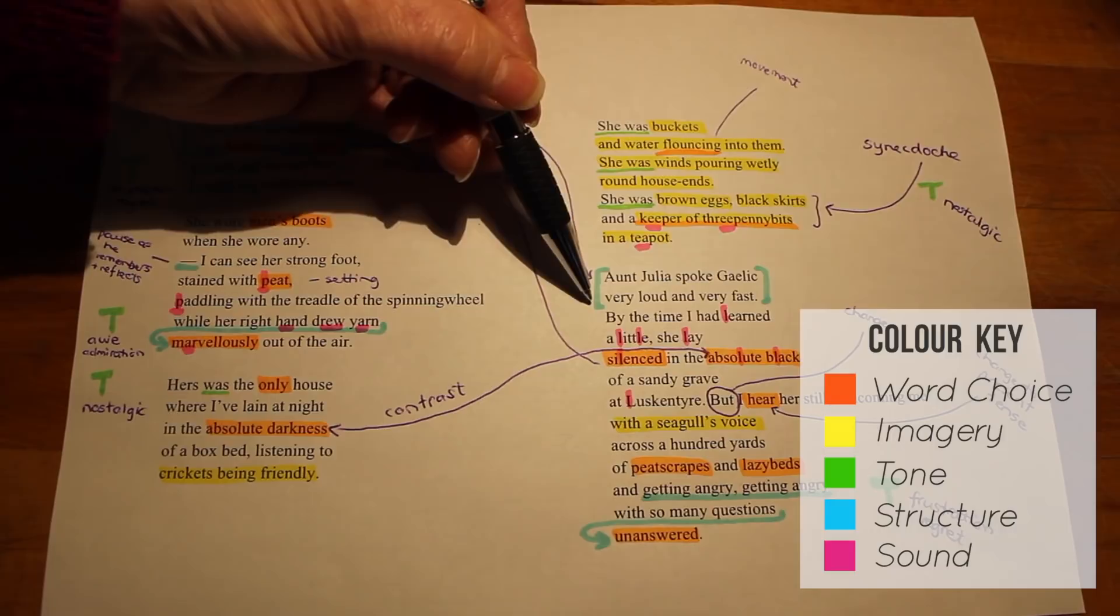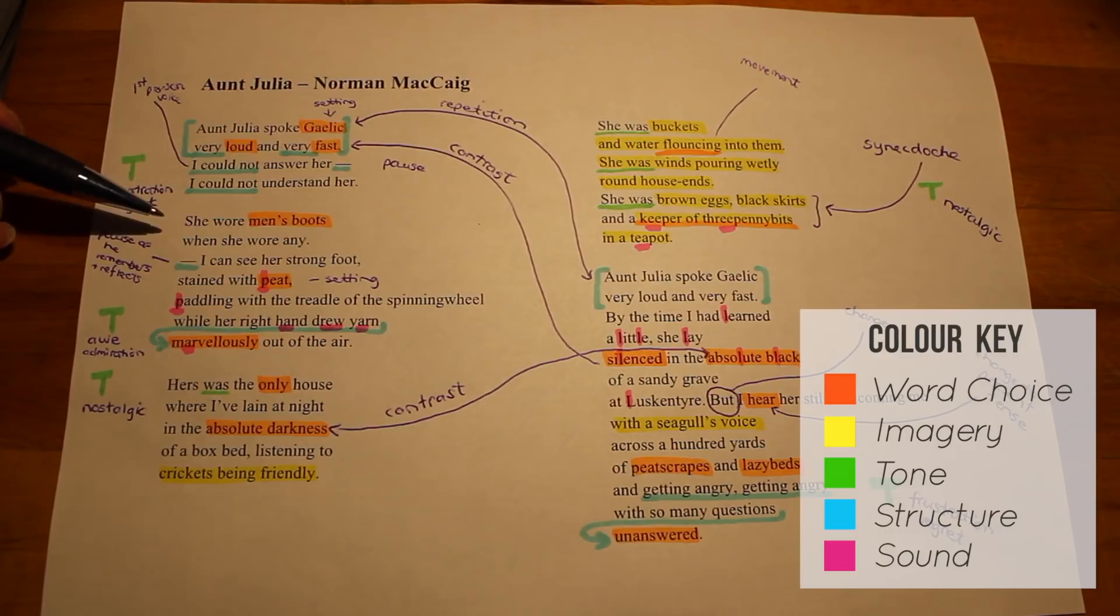Moving on to the second stanza, we learn more about this interesting lady. We're told that she wore men's boots, and that immediately suggests that she has a tough life. She has to do the outside chores, it doesn't sound as if there's anyone else in her life, and she's a crofter.